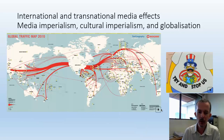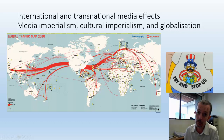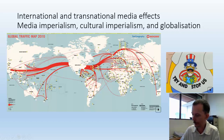This map shows the global traffic map of media from 2010, which is getting a bit old, but you can see how a lot of media is still coming from the USA and from Europe. So while there are counter-flows and decentralization, there is still a domination by some central powers, which is important to remember.